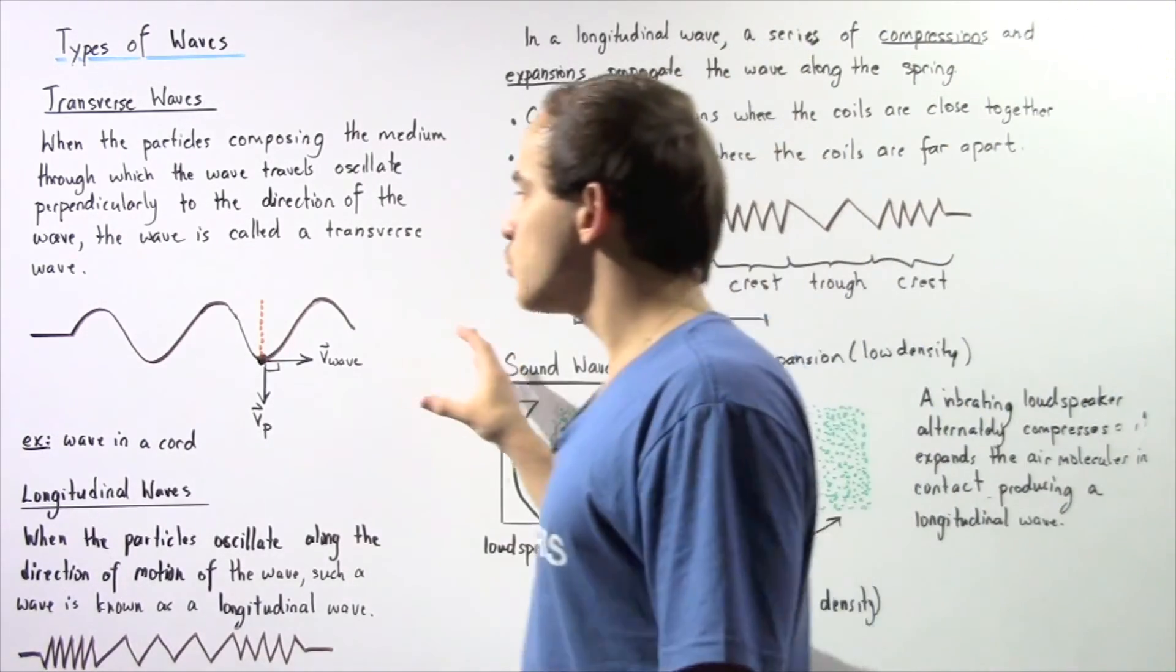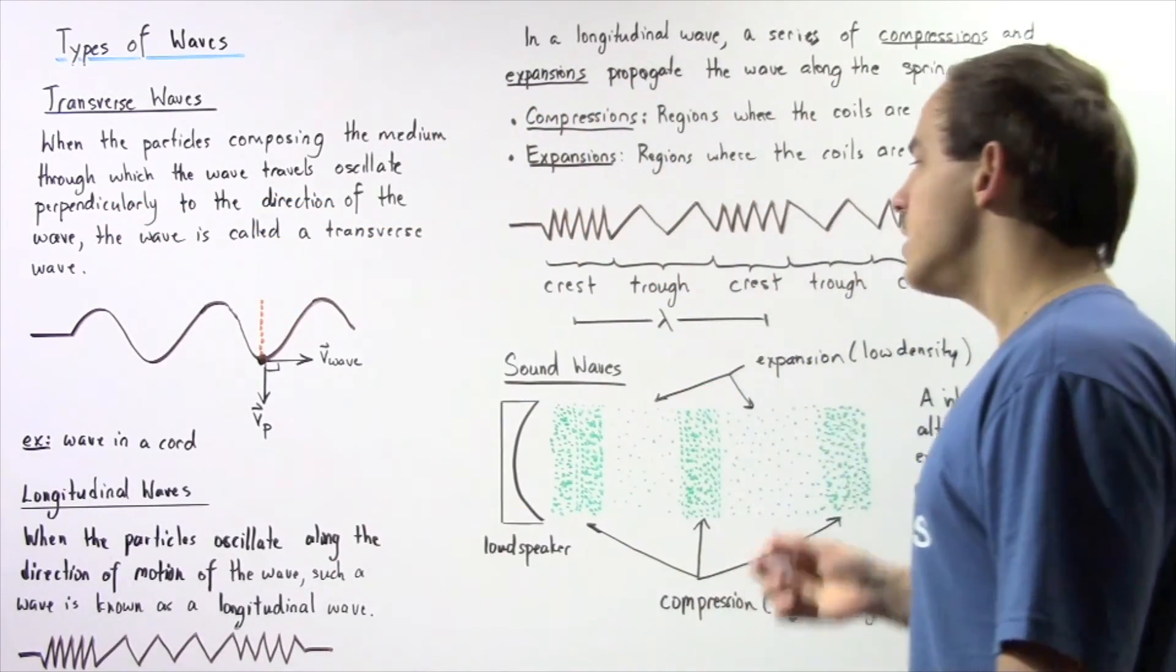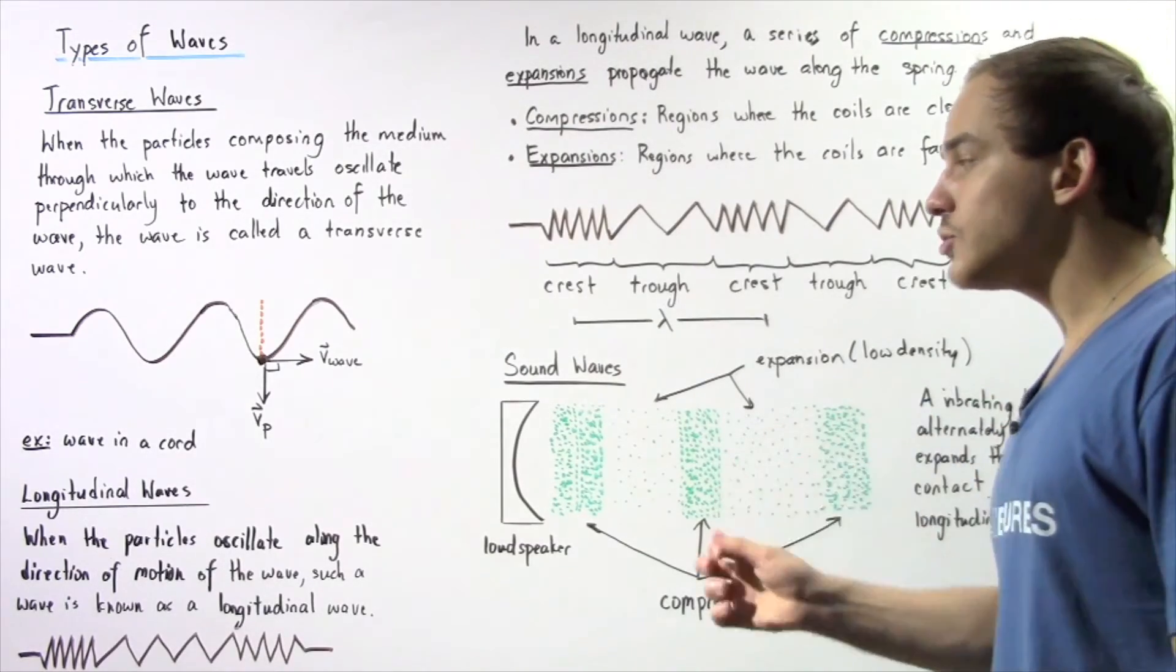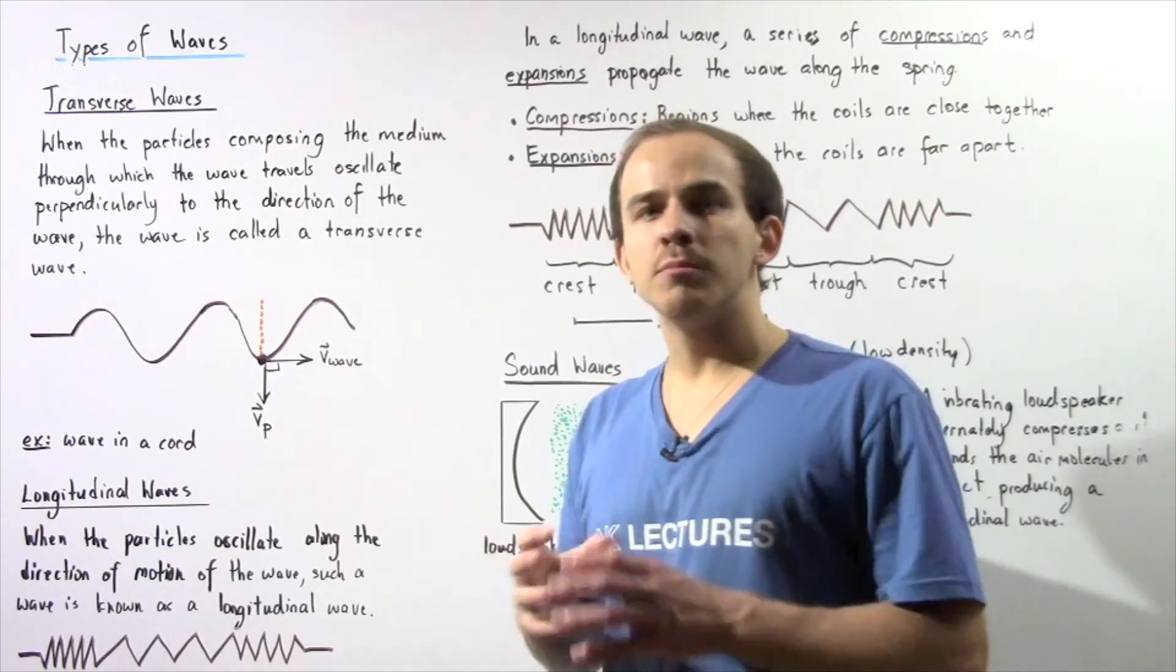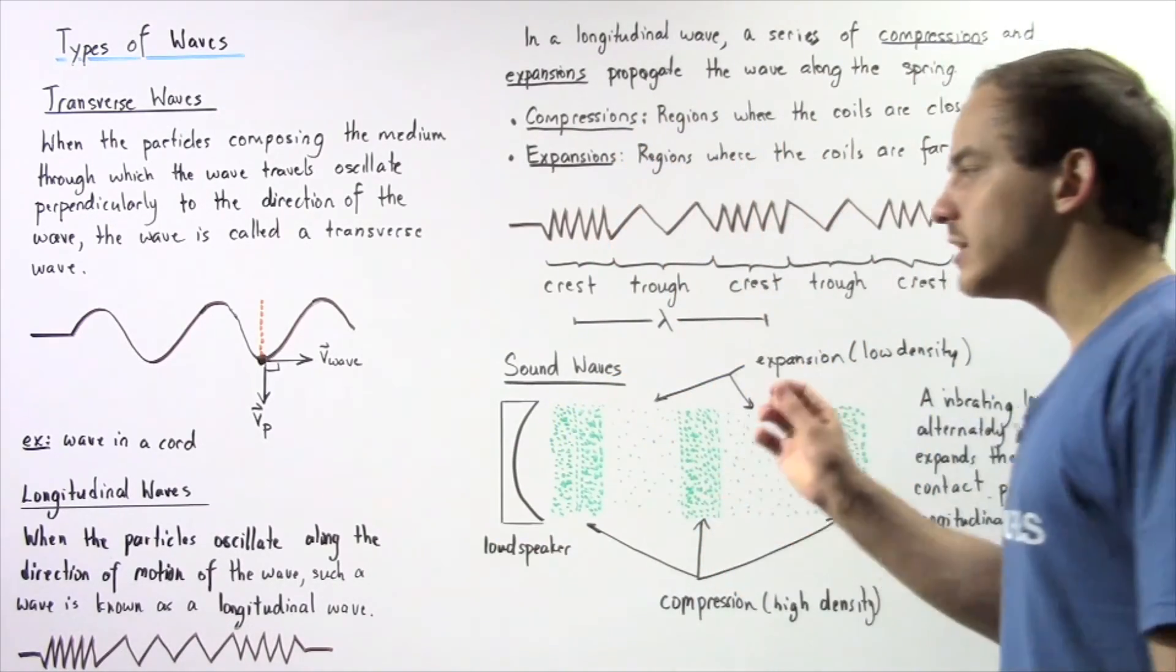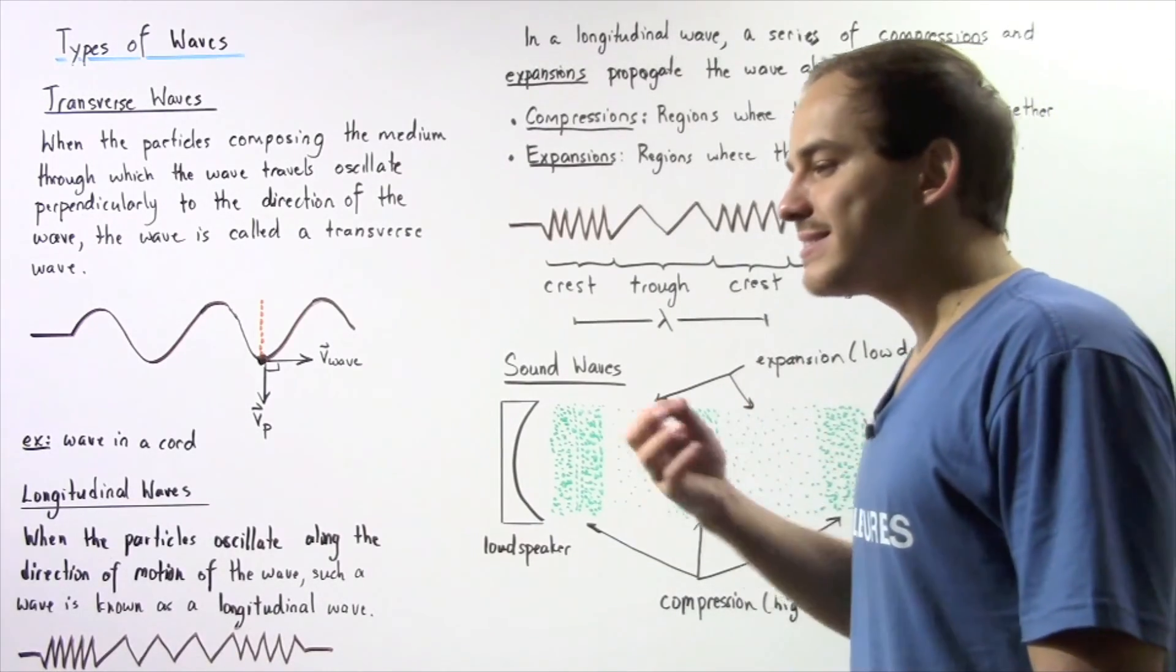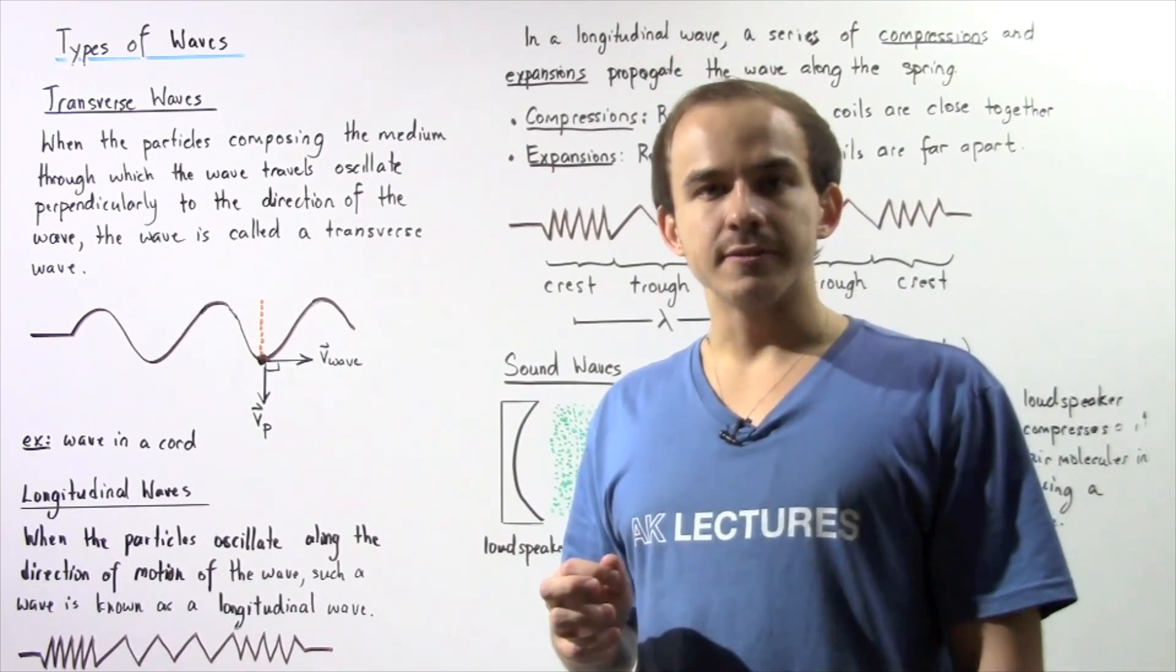Just like the distance between any two crests on our transverse wave is also the wavelength. Now the velocity of a longitudinal wave is simply how quickly our compressions are taking place. While the frequency of a longitudinal wave is simply how many cycles or how many compressions are made every single second.